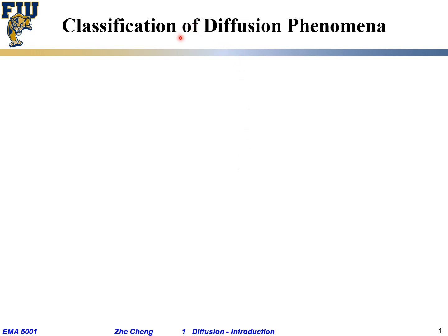With diffusion, we can classify it in different ways. One way to classify diffusion is by the so-called uniformity of concentration. Concentration means, quite often within a certain volume, how much of a substance or species or ion there is. Based on the uniformity of concentration, we can classify diffusion.